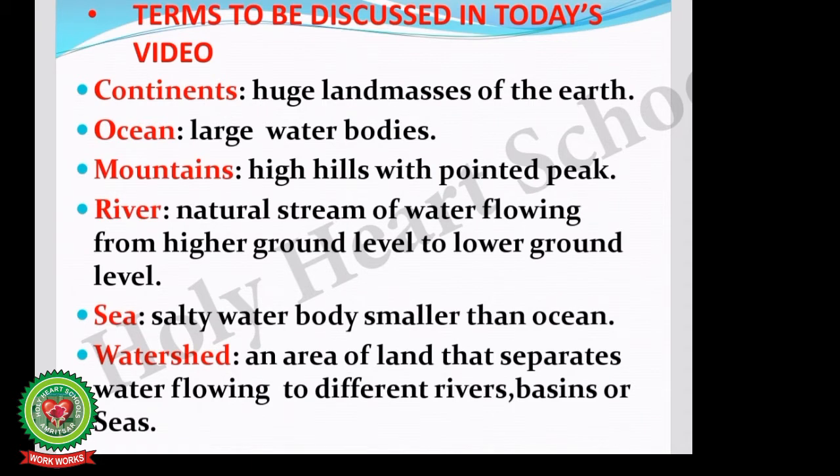Students, let us discuss the terms to be covered in today's video. Continents are huge land masses of the earth. Ocean refers to large water bodies. Mountains are high hills with a pointed peak. A river is a natural stream of water flowing from higher ground level to lower ground level. A sea refers to salty water bodies smaller than an ocean.